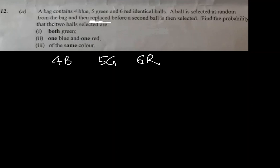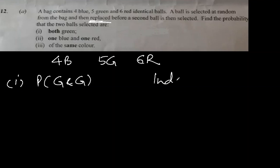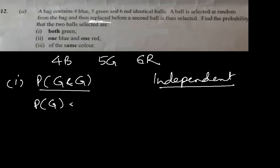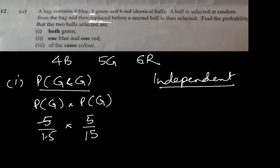First part: probability of green and green. Since we are replacing the ball back, the probability of the second withdrawal is not dependent on the first withdrawal, so they are independent events. We can write this as probability of green multiplied by probability of green. There are five greens out of fifteen total (4+5+6=15), so 5/15 times 5/15, which simplifies to 1/9.